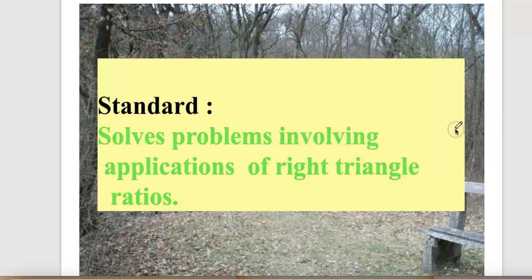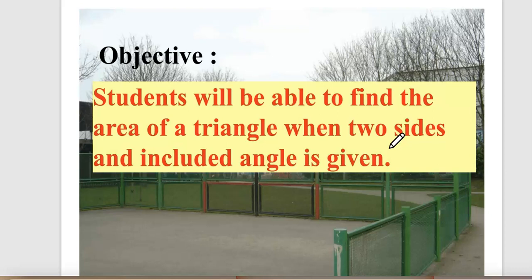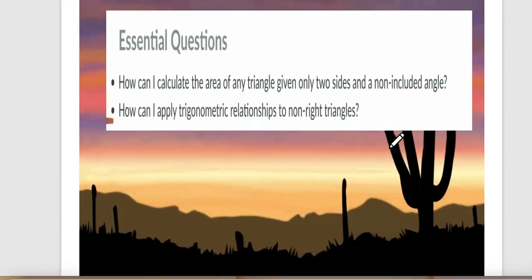Our standard of the day is: solves problems involving applications of right triangle ratios. Our objective for the day is: students will be able to find the area of a triangle when two sides and the included angle is given. Our essential questions are: how can I calculate the area of any triangle given only two sides and a non-included angle? How can I apply trigonometric relationships to non-right triangles?